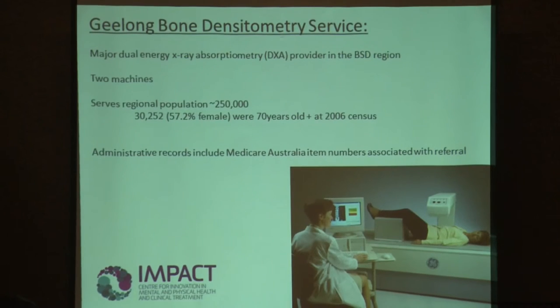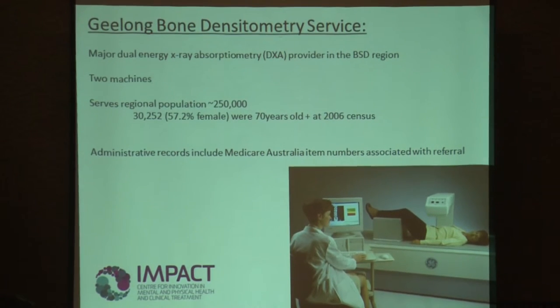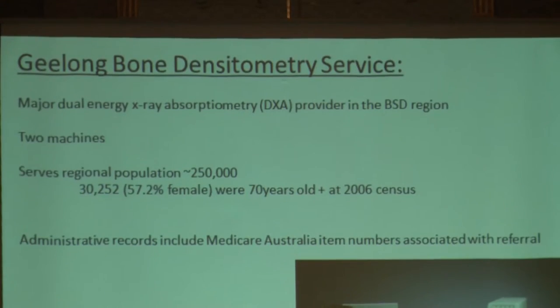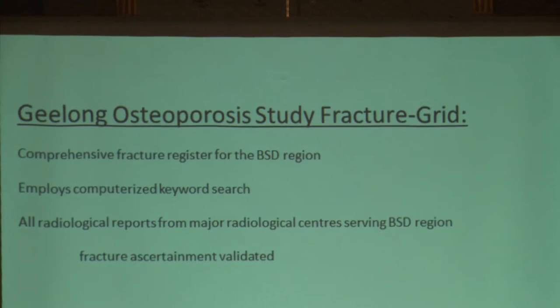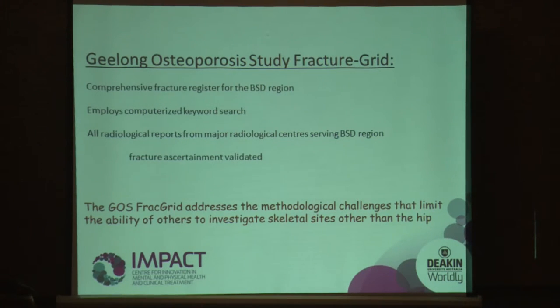The patient administrative dataset is the Geelong Bone Densitometry Service — it encompasses one major service provider, so anybody who has a DEXA or bone density scan is in this dataset. It's comprehensive, and access requires a Medicare item number. There's also the GOSS fracture register — a comprehensive fracture register for the defined Barwon Statistical Division, employing computerised keyword searches cross-referenced with radiological reports. Everybody who had a fracture in that region is in this register, making it very strong data.